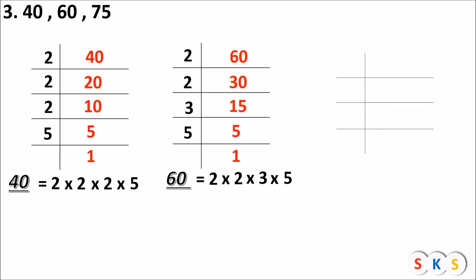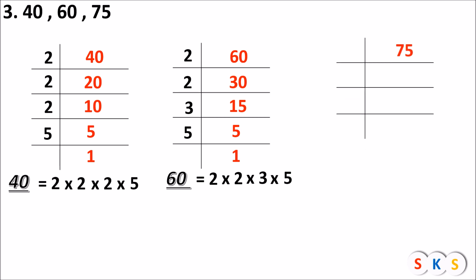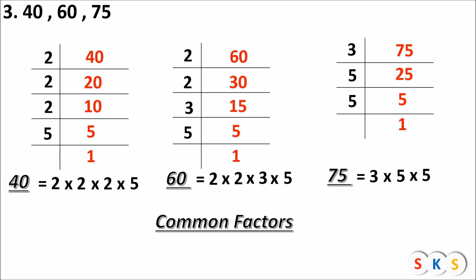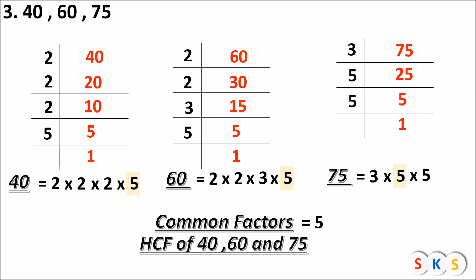Now find the prime factor of the next number, 75. 75 is divisible by 3, which is prime. 75 ÷ 3 = 25, 25 ÷ 5 = 5, 5 ÷ 5 = 1. So the prime factor of 75 is 3 × 5 × 5. Now we find common factors in all three. You can see that 5 is common in all. Therefore, SCF of 40, 60, and 75 is 5.